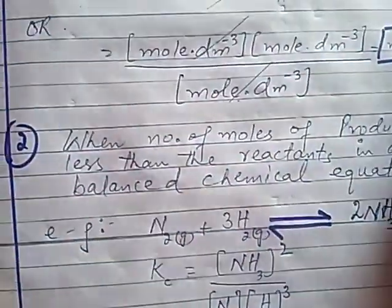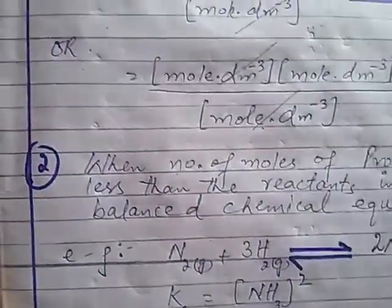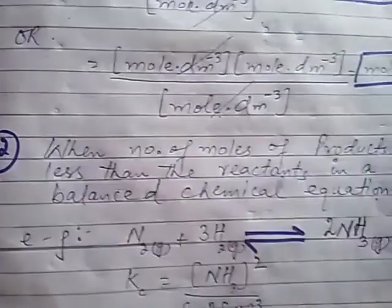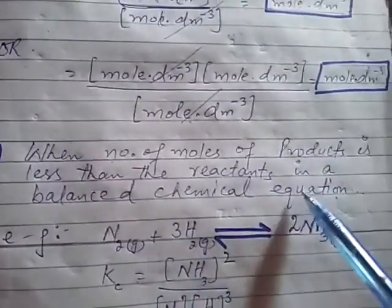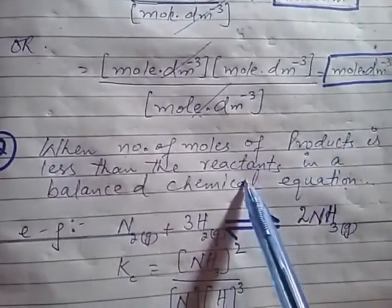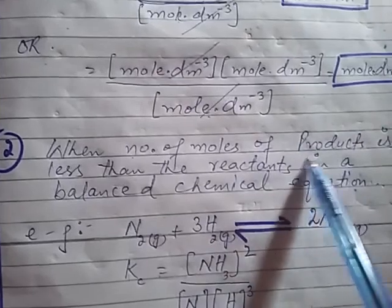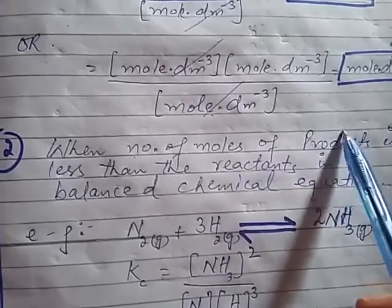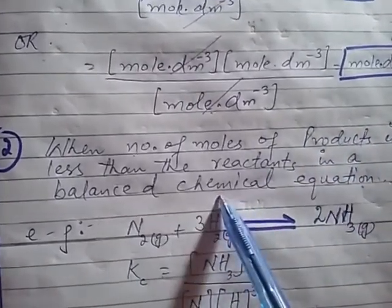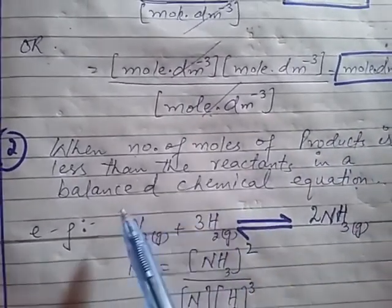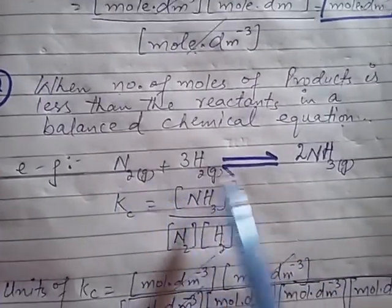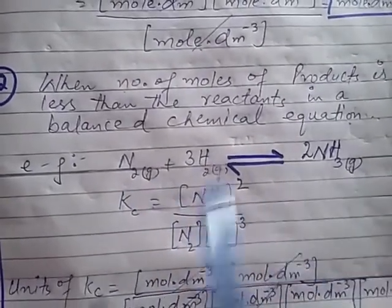The next condition is that the number of moles of product is less than the reactant. In which case, the number of moles of product will be less than the reactant. Now, what will be the unit? For example, here we have the following example.